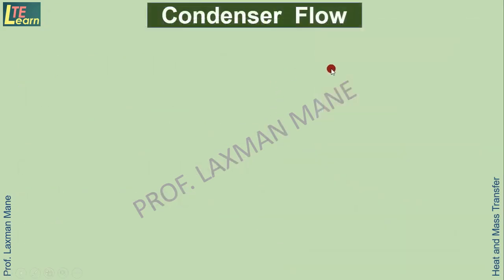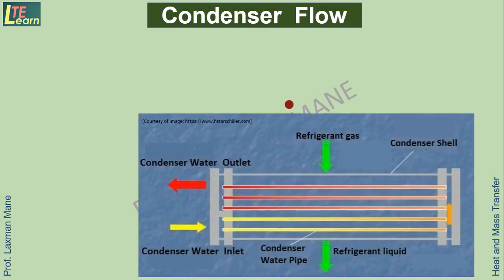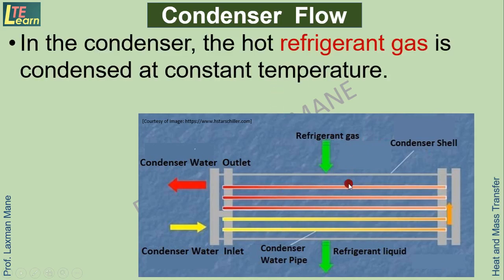The next case is condenser flow, which is an application of a central air conditioning chiller. In that system there are two parts: one is the condenser section and the other is the evaporator section. In the condenser section, the refrigerant is condensed — meaning heat is rejected from the refrigerant — and water is used for this heat rejection. The hot refrigerant gas is condensed at a constant temperature.